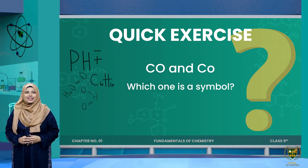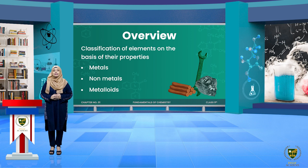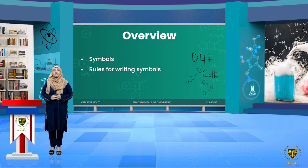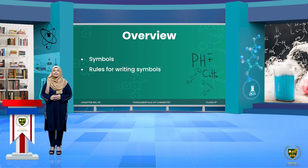So in this lecture we have discussed the classification of elements on the basis of their properties — metals, non-metals, and metalloids — along with their properties and examples. We also discussed chemical symbols and learned the rules for writing them. I hope that now, just by looking at letters, you will be able to tell whether it is an element's symbol or just an English word. In our next class we will look at the concept of valency. Allah Hafiz.